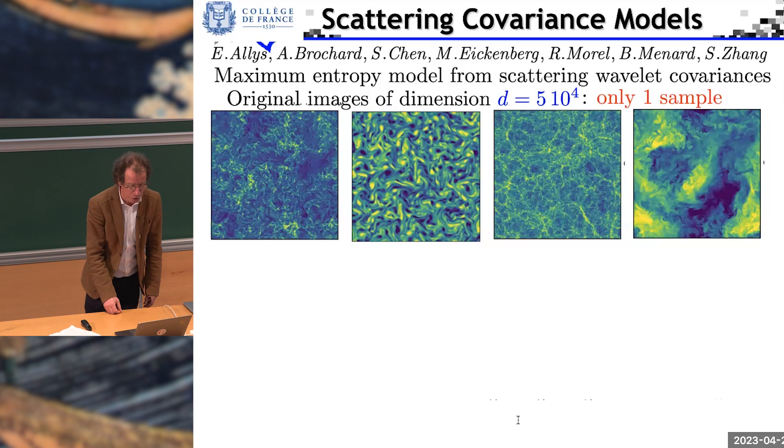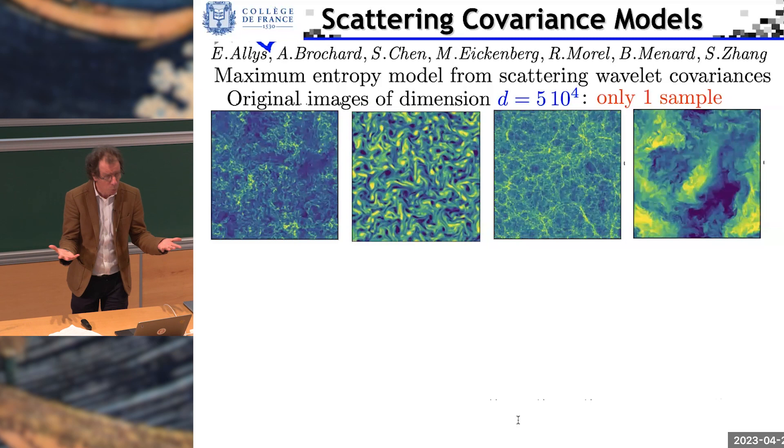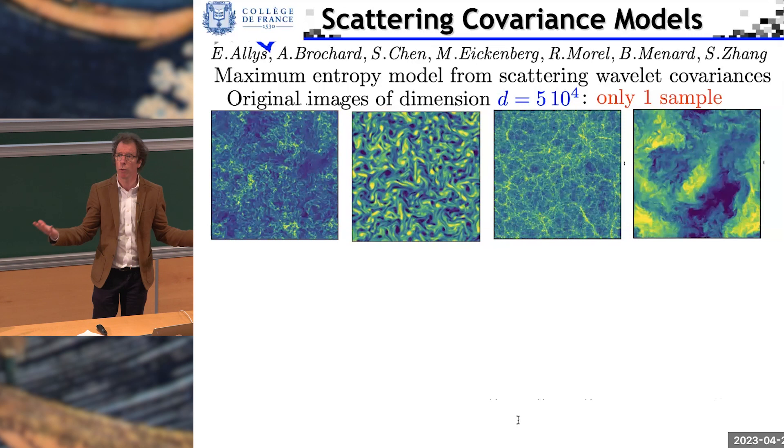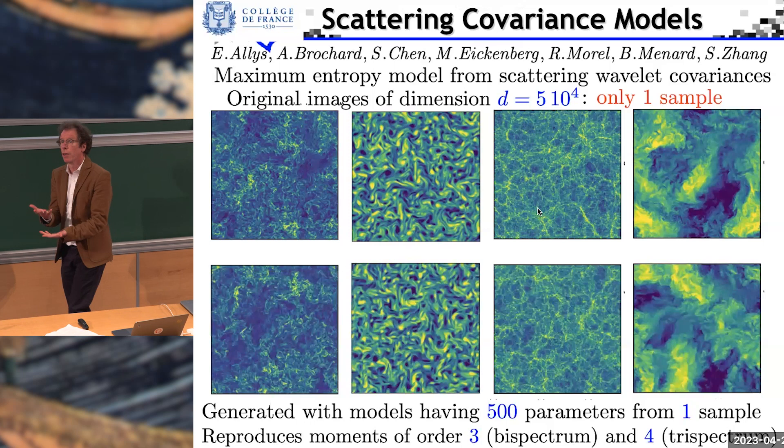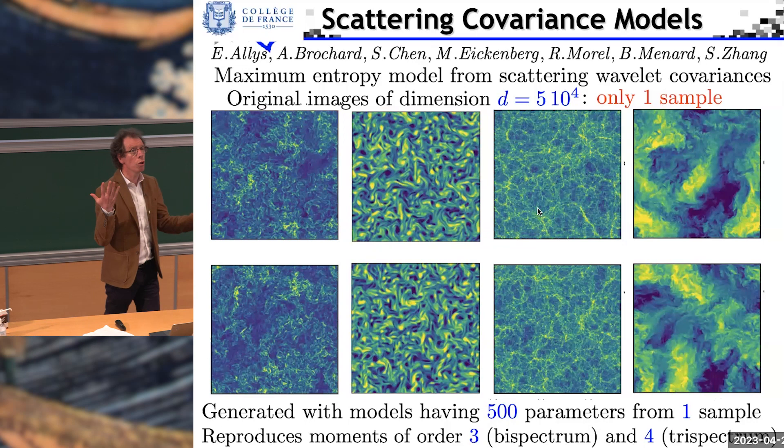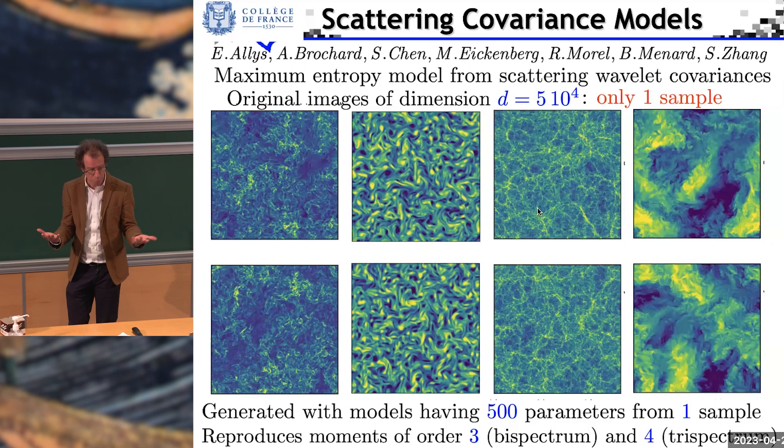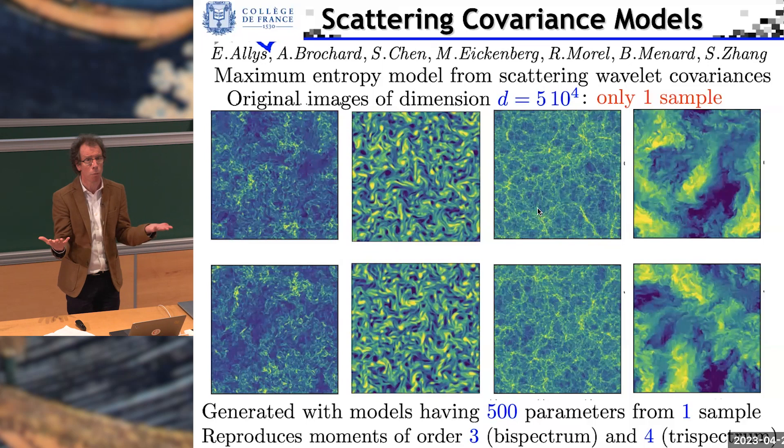And the idea was, can we do what we couldn't do, what Wilson couldn't do, meaning can we now deal with very complex fields such as these turbulent fluids or this kind of cosmic web? And the answer is yes, with only one image, 500 coefficients. Not only you get here good-looking images, but these are maximum entropy models, so it guarantees maximum variability, and it reproduces third order or fourth order moments, so you really have models. But that works for that kind of unstructured problem. What about image classification? And that's where I'm coming to the bet.